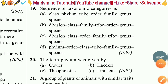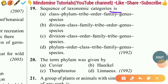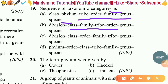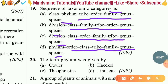Question nineteen: The correct order of taxonomic categories is — class, phylum, tribe, order, family, genus, species, division; class, family, tribe, order, genus, species; division, class, order, family, tribe, genus, species; or phylum, class, order, tribe, family, genus, species? The correct answer is option C — division, class, order, family, tribe, genus, species.